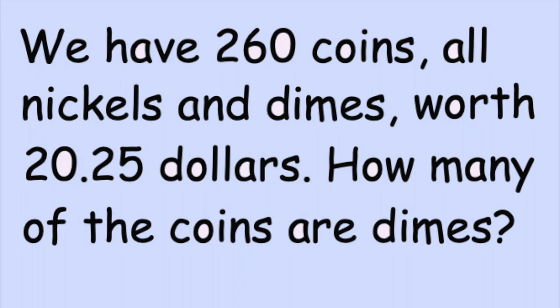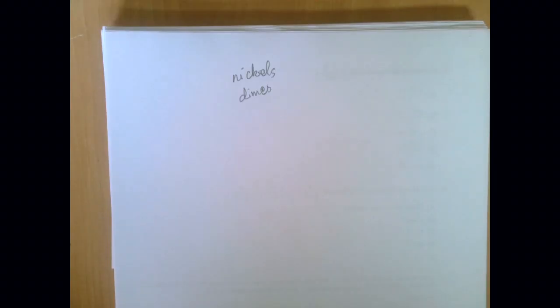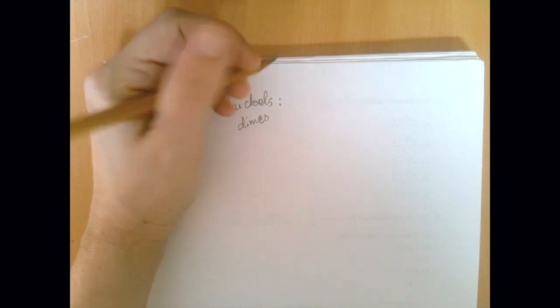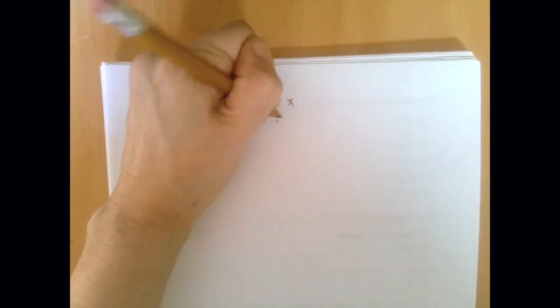So we have a word problem about coins, where we have two types of coins, and we're given the number of coins and the total value of coins. This is fairly similar to the chicken-cow problem. It's just nickels have 5 cents and dimes have 10 cents. So if we call the number of nickels x and the number of dimes y,